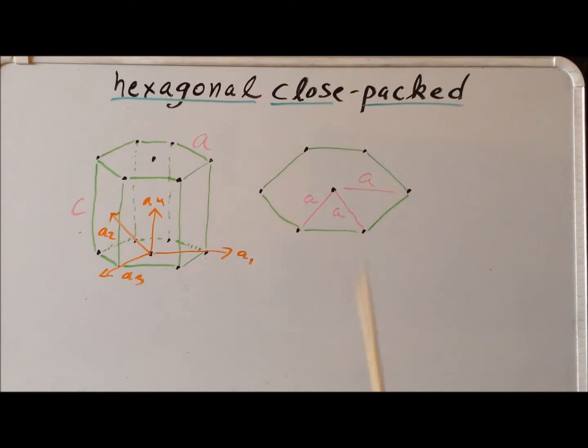Recall that, for example, in the face-centered cubic (111) plane, which resembled this, that the distance between two atoms was the square root of 2 over 2 times A, sometimes written as A divided by the square root of 2. Whereas in the hexagonal system, our parameter for the distance between two atoms is our length A.